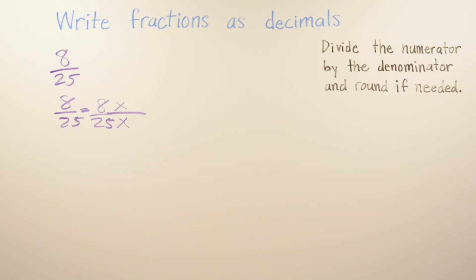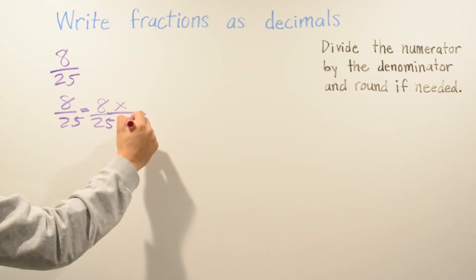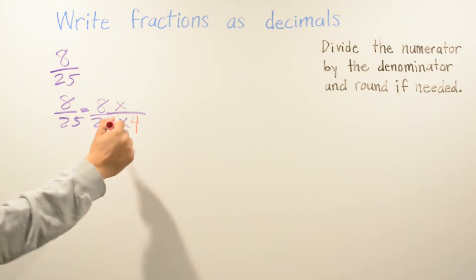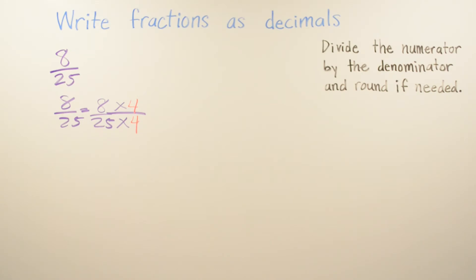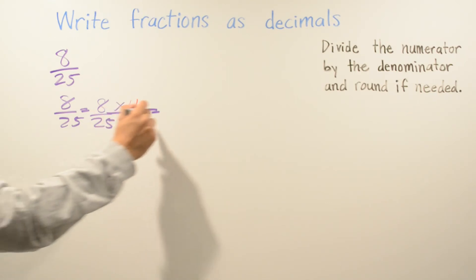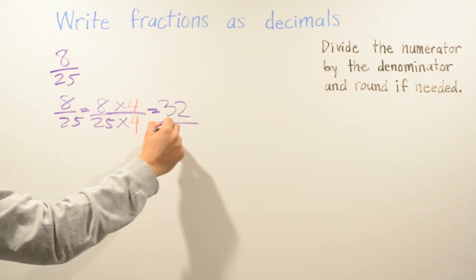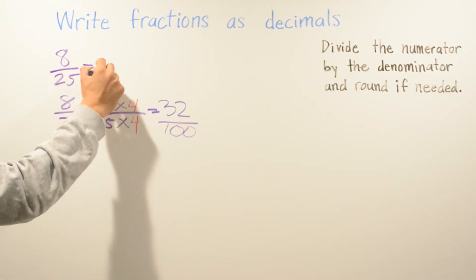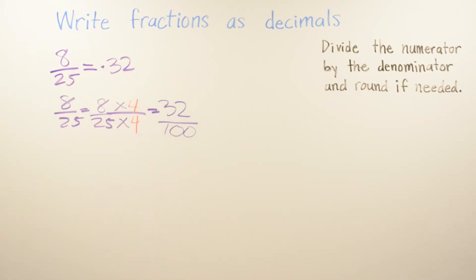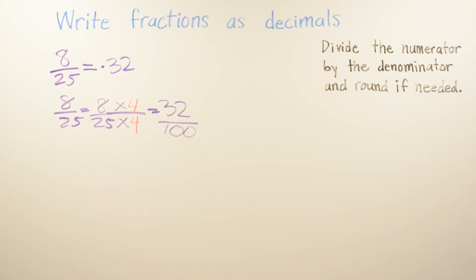We need to find what number to multiply twenty-five by to get one hundred — that's twenty-five times four equals one hundred. Whatever you do on the bottom, you also do on the top. So eight times four is thirty-two and twenty-five times four is one hundred, giving us thirty-two over one hundred, which as a decimal is 0.32.